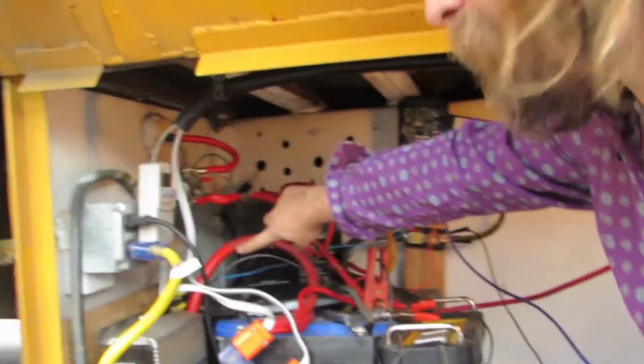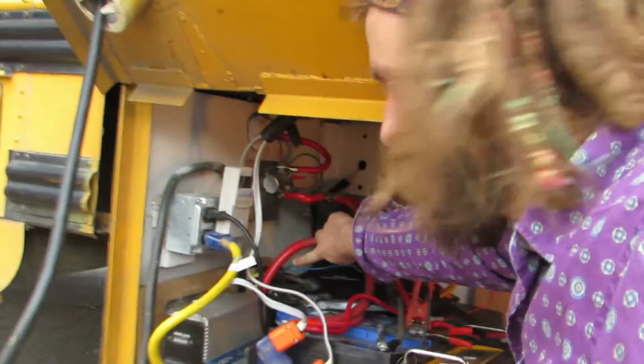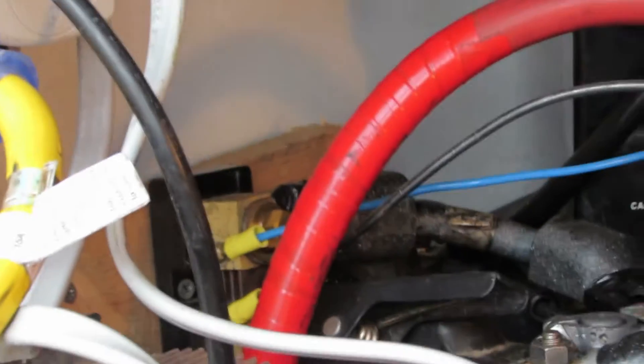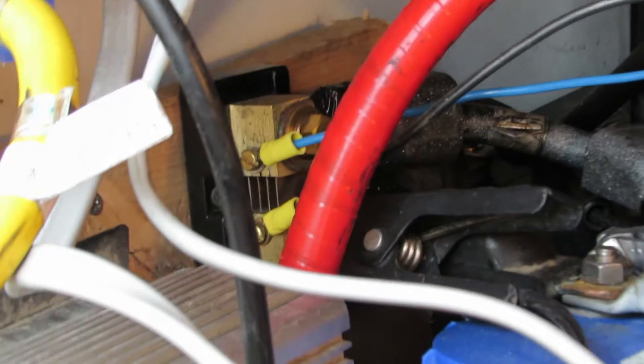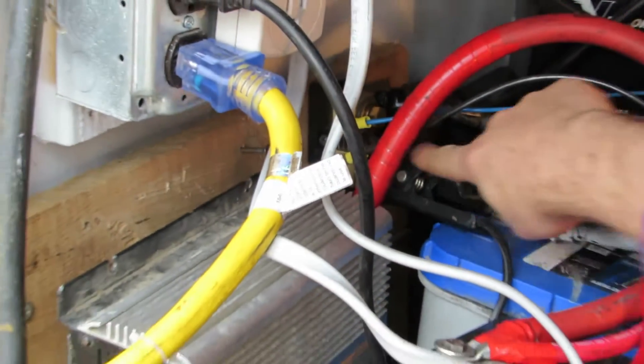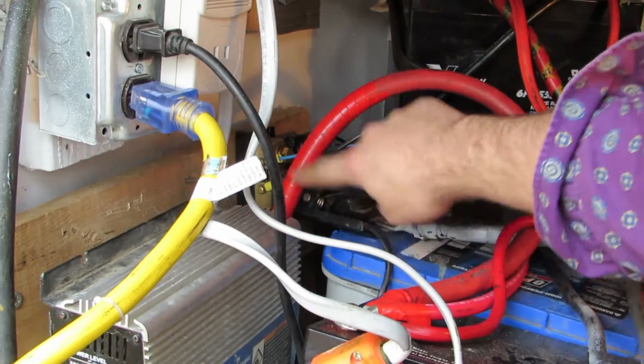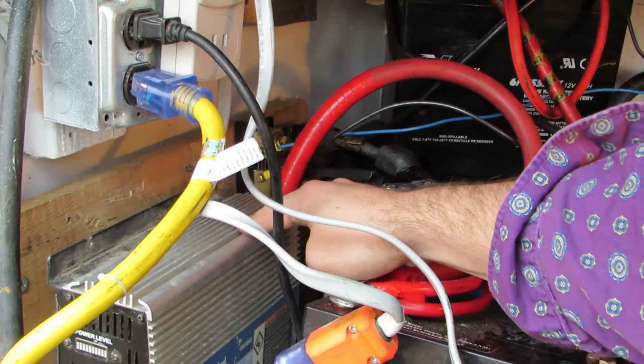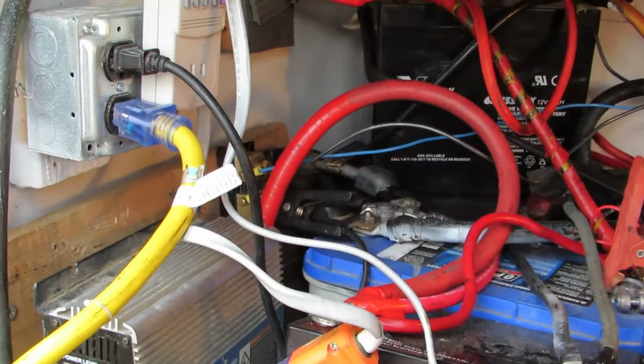Now, you can see we have another shunt here. See that little guy in the back? Now, that shunt performs the same function, but instead of being connected to the frame of the bus, and thus allowing all of the devices in the bus to complete their circuit through it, this shunt is connected to our inverter and to our battery charger. You can see this clip here is for the battery charger, and then it's connected via a thicker cable to the power inverter.